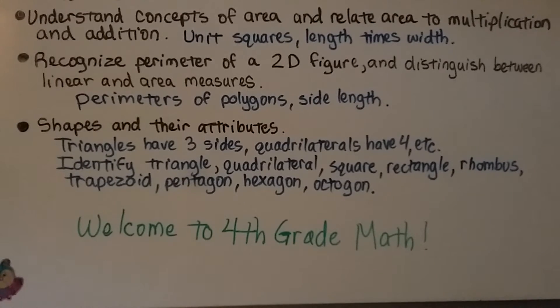You need to recognize perimeter of a 2D figure and distinguish between linear and area measures. That means between perimeter and area measures. Do you know the perimeters of polygons and how to find them? Or what a side length is?